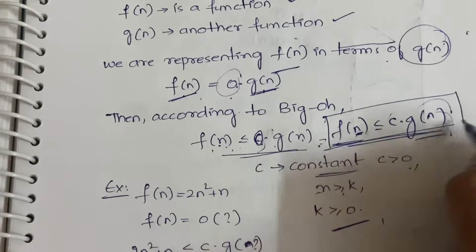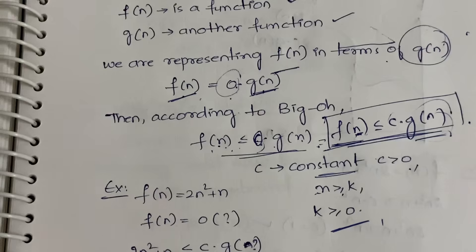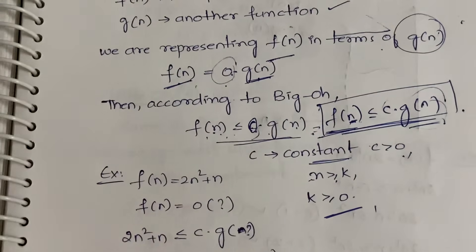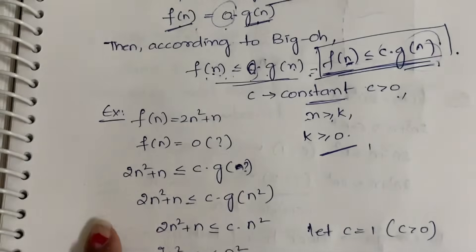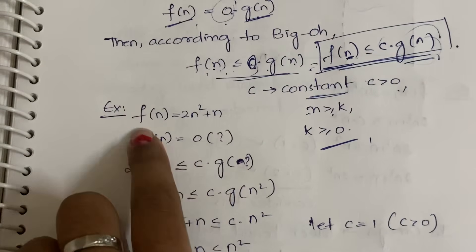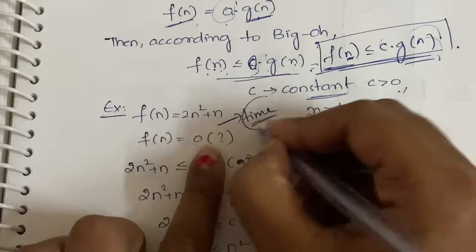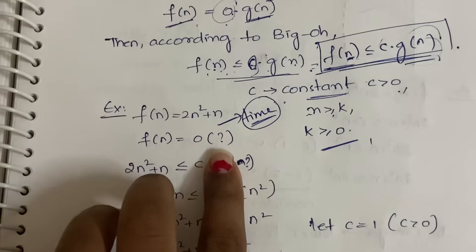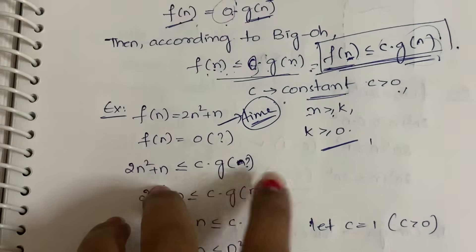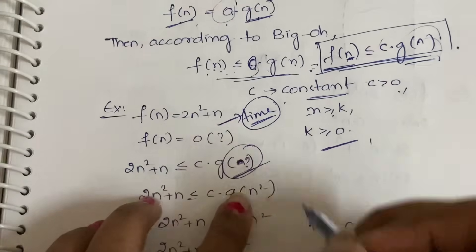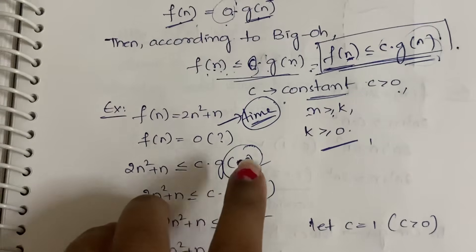To summarize: Big O is the most frequently used notation, representing worst case time complexity and the upper bound. Now let us consider an example. Say f(n) = 2n² + n. You need to find the time complexity. To do so, you represent it in terms of g(n). Among n² and n, n² has the highest power, so g(n) = n².